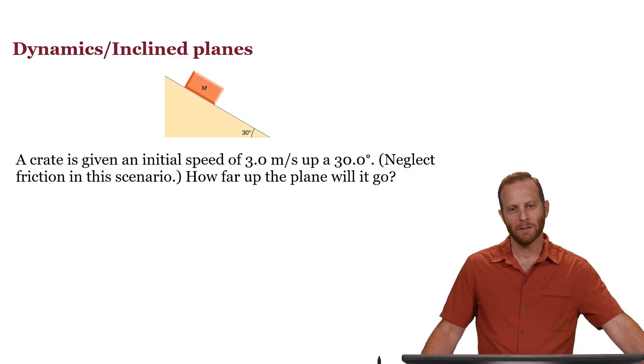All right, we're told a crate is given an initial speed of 3 meters per second going up an incline, which is making an angle of 30 degrees, measured with respect to the ground. We'll neglect friction in this scenario, and we'd like to know how far up the plane will this crate go.